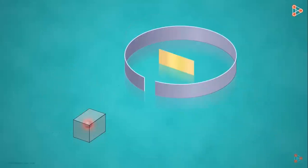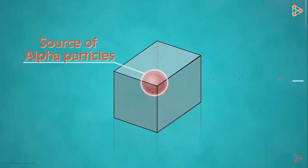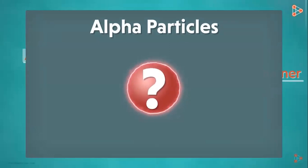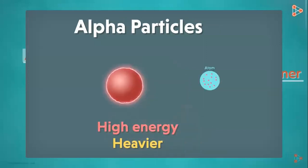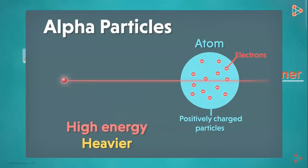This is how the setup of his experiment looked like. He used a source of alpha particles locked in a lead container with a very small slit. This ensured that the alpha particles only came out through a small opening and traveled in a straight line. The alpha particles were chosen because they had high energy and were heavier. If the atom is like a pudding of positively charged particles with electrons embedded in it, the particles should pass straight through it.